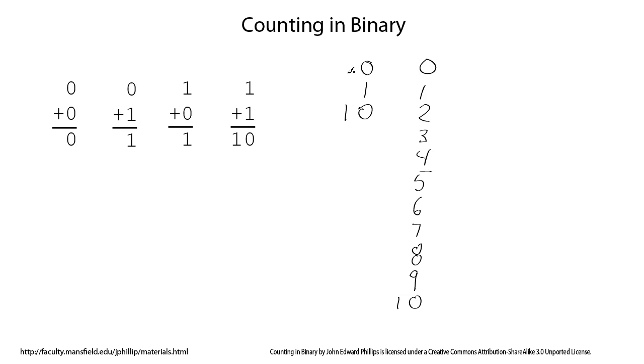Instead of the tens column though, this is the twos column. We have the ones column, the twos column, the fours column, the eights column. In decimal, we have the ones column, the tens column, the hundreds column, the thousands column. But because we have fewer symbols, just 0 and 1, the column weightings are different.